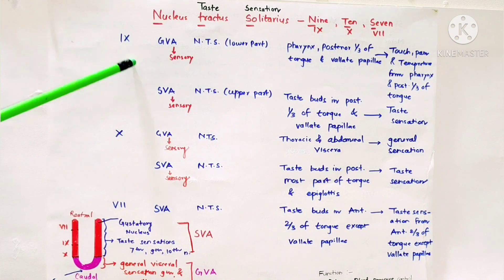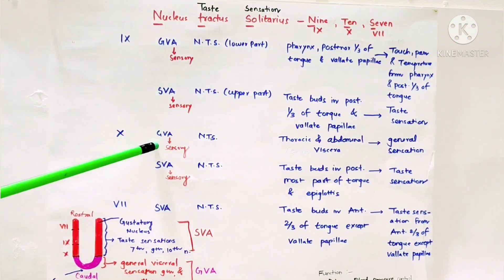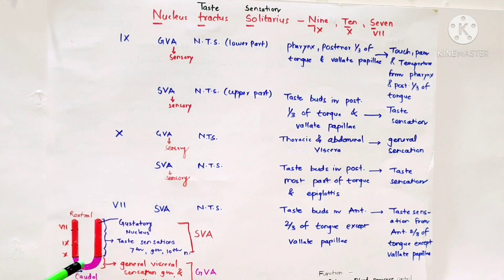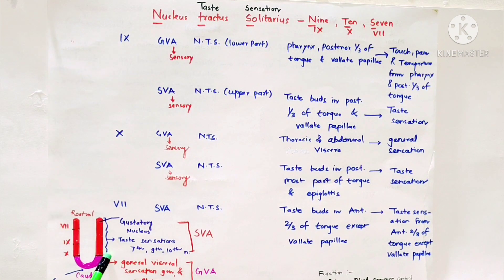Edinger-Westphal nucleus of oculomotor nerve supplies sphincter pupillae and ciliary muscle. Function is constriction of pupil and accommodation of eye.